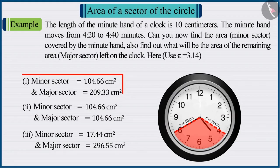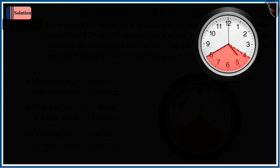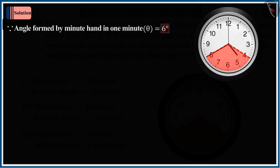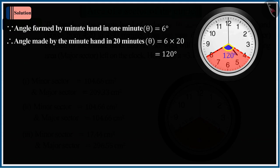Let's discuss option 1. We know that the angle formed by the minute hand in 1 minute is 6 degrees. And here, it says that the minute hand moves from 20 to 40 minutes, which means that it covers a total of 20 minutes. So, the angle made by the minute hand in 20 minutes would be 120 degrees.